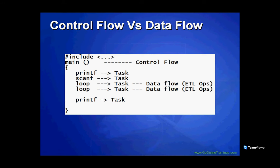The difference between Control Flow and Data Flow: Control Flow is where execution starts, just like main() in C. It contains lots of tasks and containers. In C language, statements run one by one sequentially, but in Control Flow all activities are parallel by default. You put arrow marks (precedence constraints) to sequence them. Data Flow is one type of task within the Control Flow — it performs ETL operations.